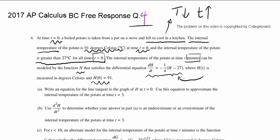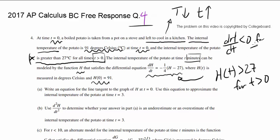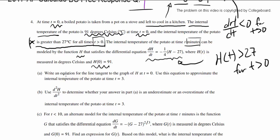Interesting thing to point out about dh/dt. Since we know h(t) is greater than 27 for t greater than zero, they tell us that, we know dh/dt always has to be negative because h minus 27 is always going to be positive and since you're multiplying that by negative one fourth. So we know dh/dt is always less than zero for time greater than or equal to zero. So it makes sense the temperature is decreasing as time is increasing.